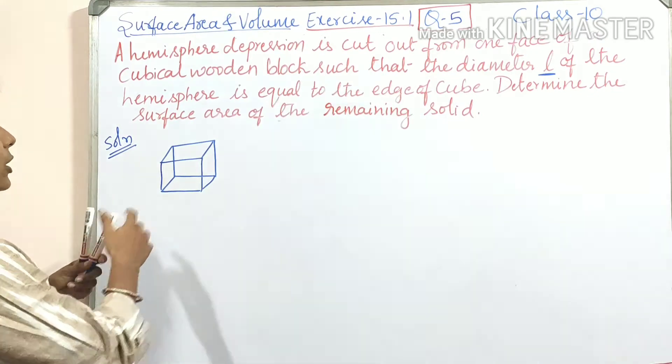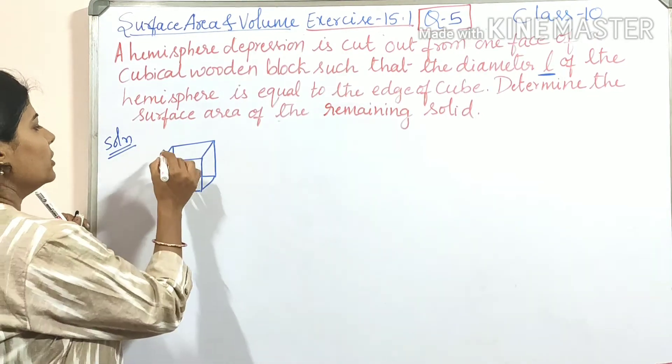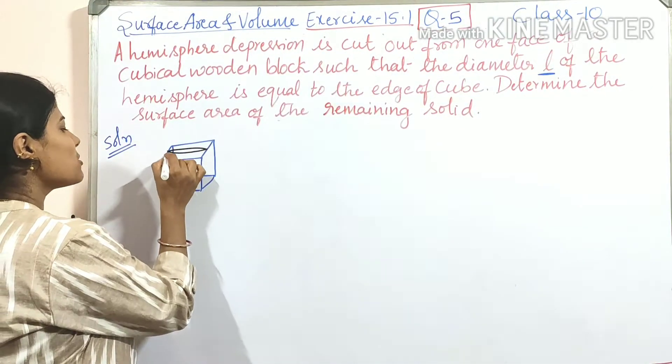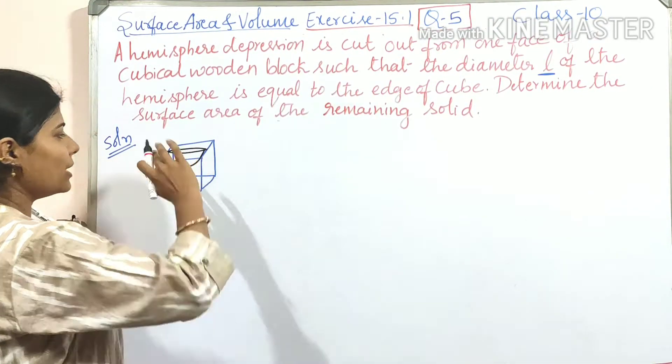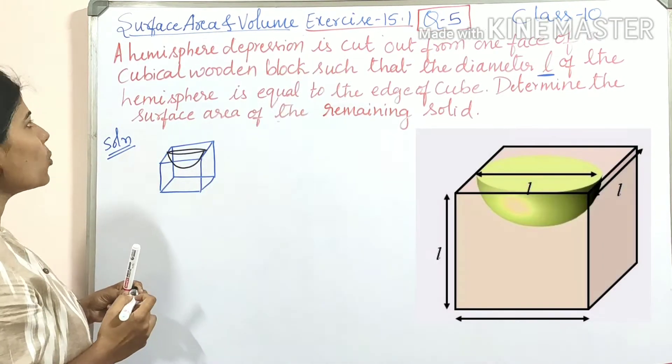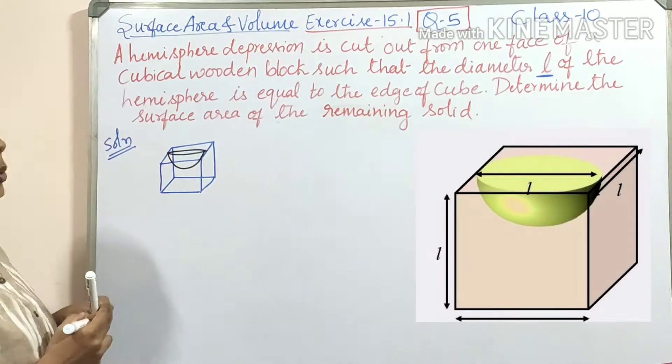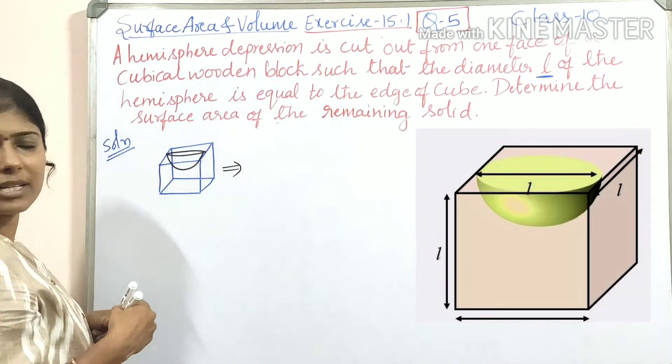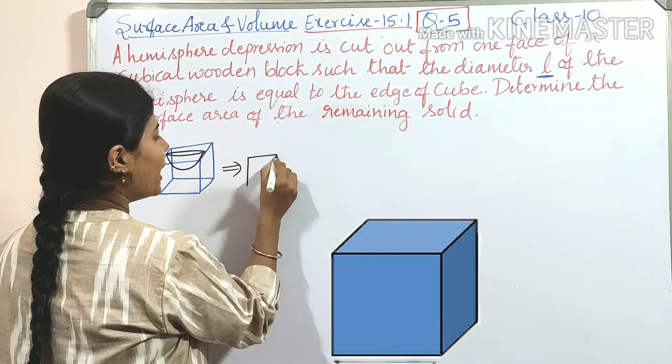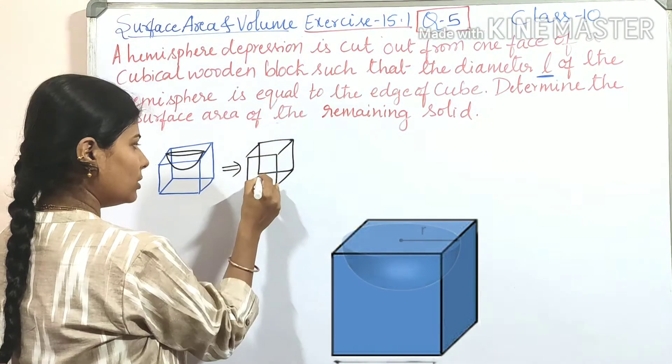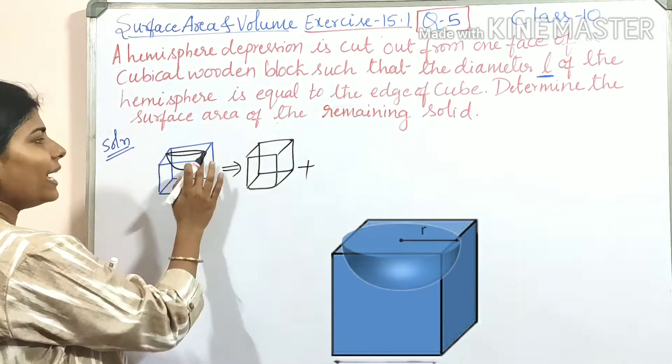So upon that one side of the cube we are removing the part of hemisphere. This part we are depressed. Depression is cut out from the one face of the cubical wooden blocks. So here if you consider the area, so area will be cube plus area of hemisphere.